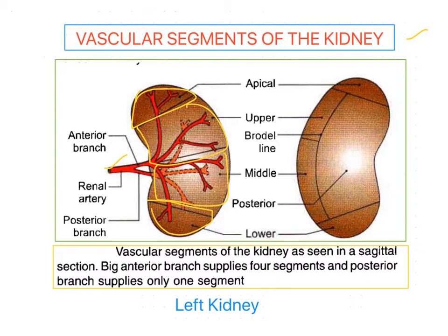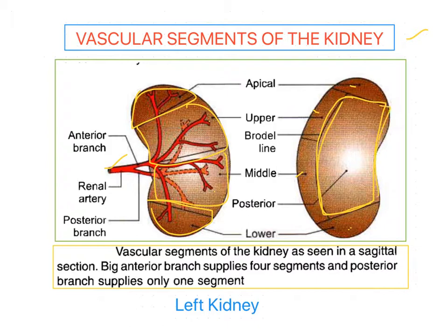On the posterior aspect, we can find only the posterior segment. The major portion is the posterior segment, and we can find small amounts of apical, upper, middle, and lower. So these are all five vascular segments present in the kidney.